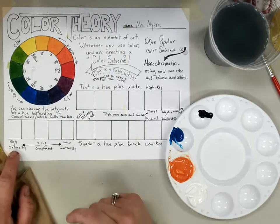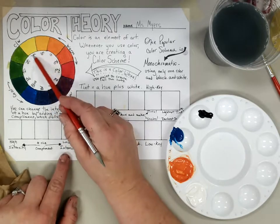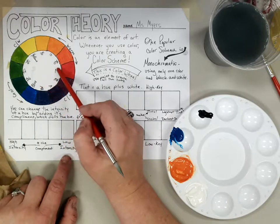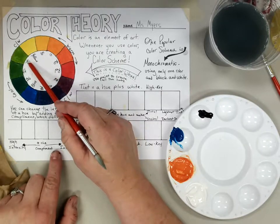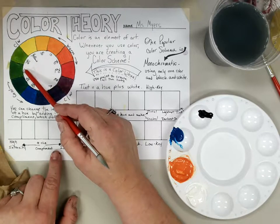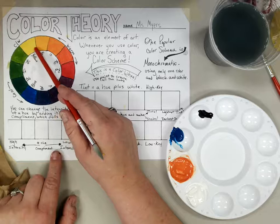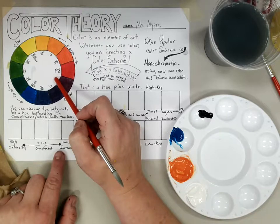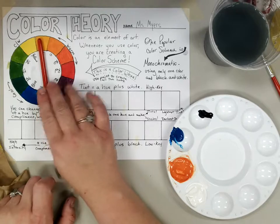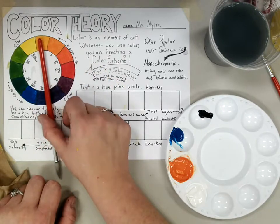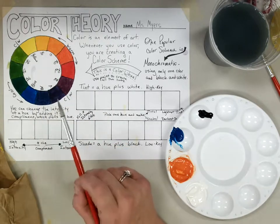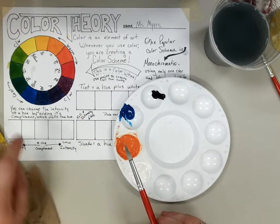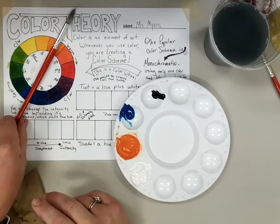I want to talk about high intensity versus low intensity color. All of these would be considered high intensity colors because they are just their straight color — like yellow, blue, and red — or mixed with a color right next to them, making them analogous colors. When you cross over to your complementary color and mix anything from one half with the other half, you can start to create duller color. I'm going to demonstrate with orange today.